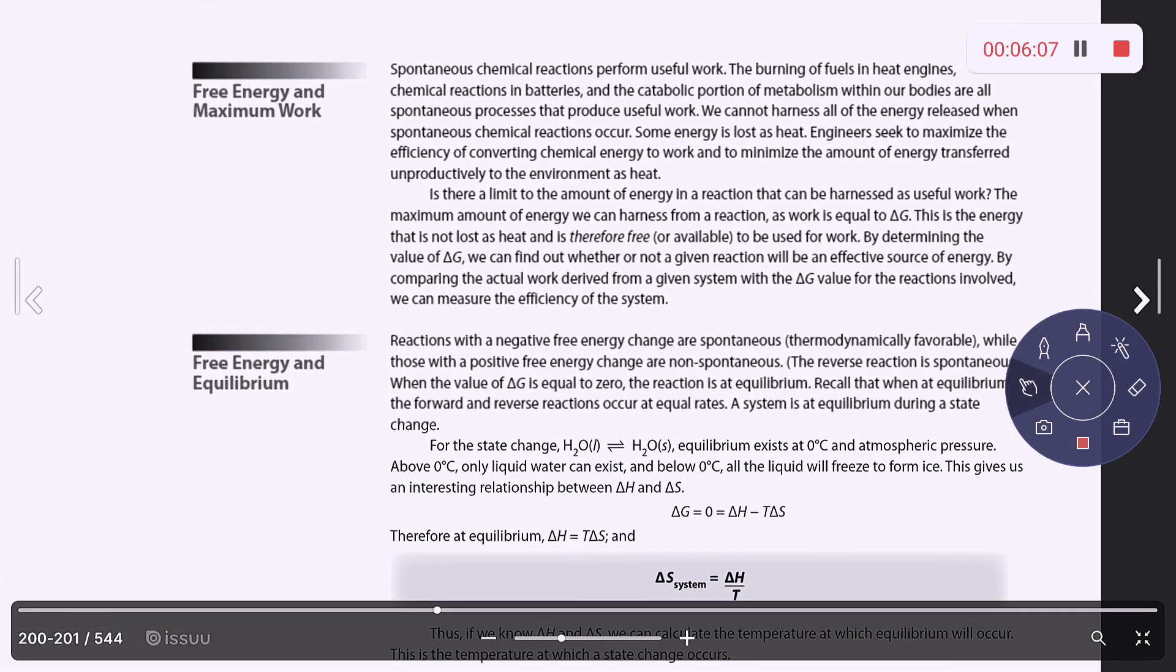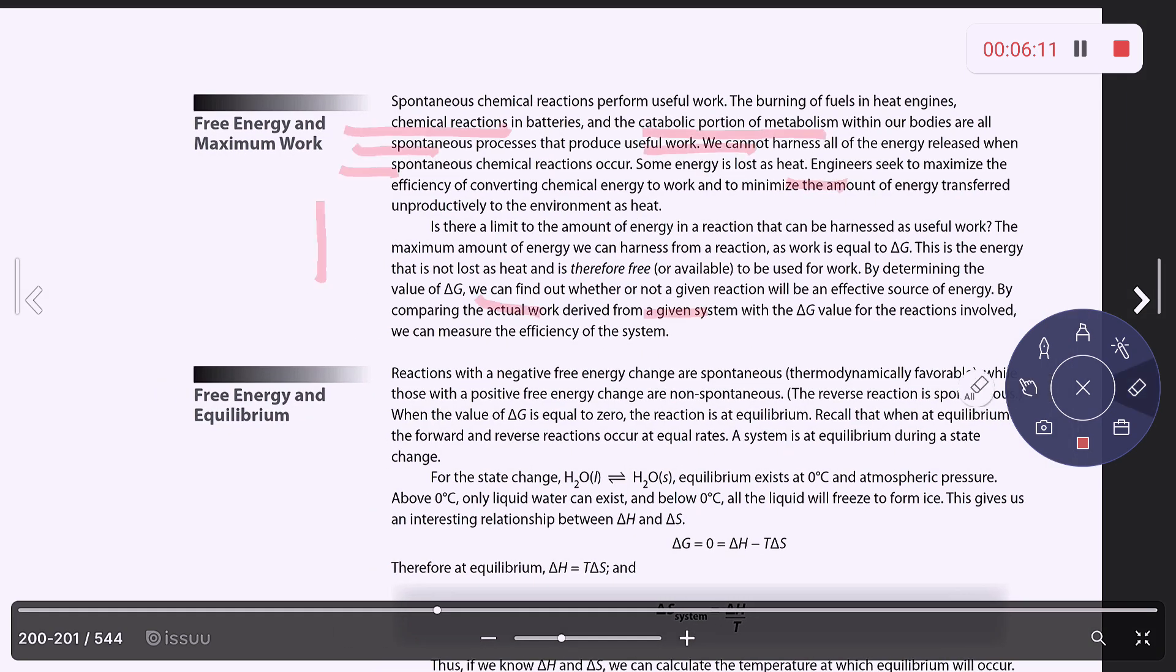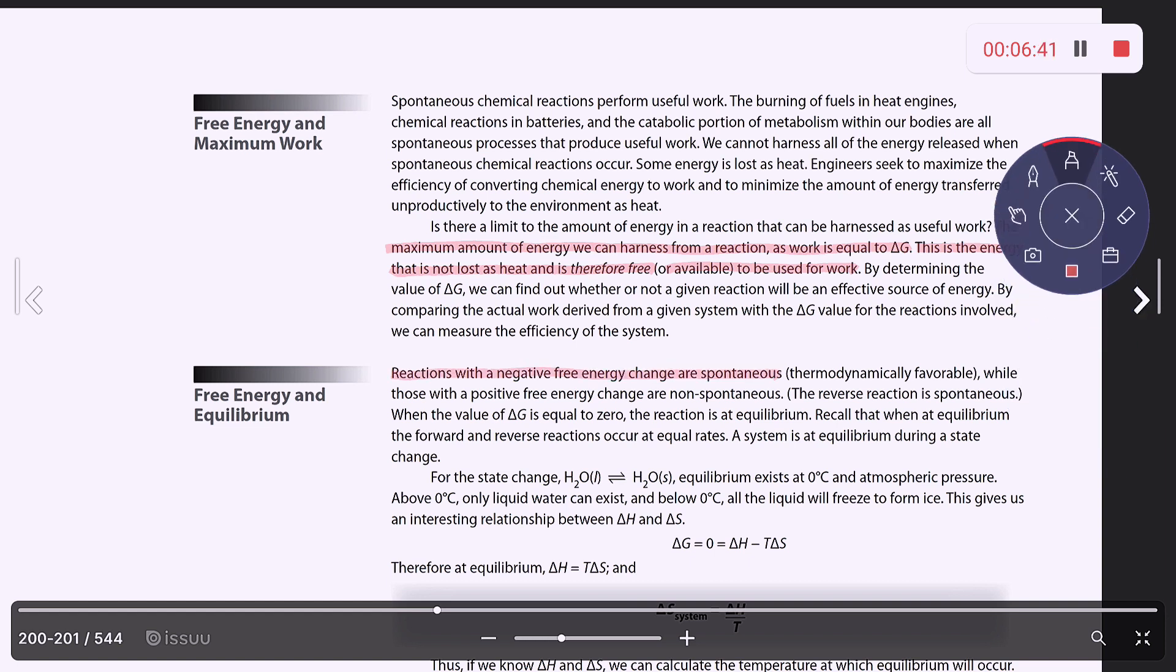Let's talk about free energy and maximum work. So the maximum amount of energy that we can actually harness from a reaction as work is delta G. So that means this is the energy that is not lost as heat and therefore free or available for us to use to do work. And reactions that have negative free energy changes are spontaneous. That means they are thermodynamically favorable. And those with positive free energy changes are non-spontaneous, which means the reverse reaction is spontaneous. And when the value of delta G is zero, the reaction is at equilibrium.